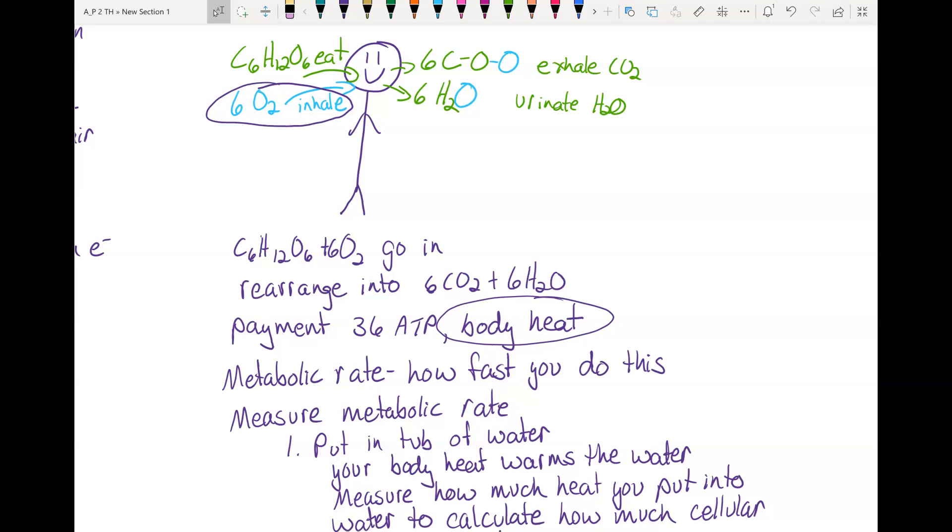Because every time you do cellular respiration you're using six oxygens. So they can calculate how many oxygens you took out of the air and then know how much cellular respiration you did.